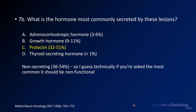For question 7b — what hormone is most commonly secreted? — the answer is prolactin. The most common type overall is probably non-functional, at about 50%, but in this case non-functional was not included in the answer choices since they were asking specifically about hormones secreted.